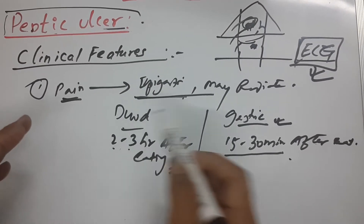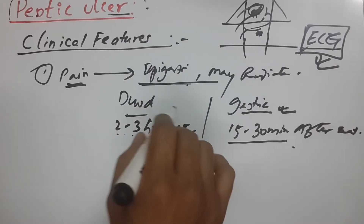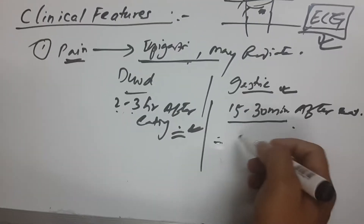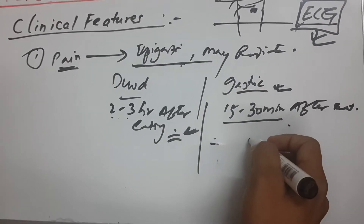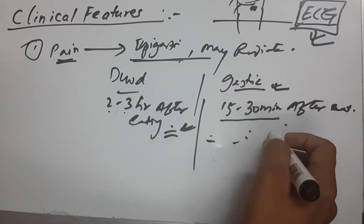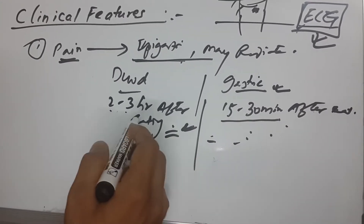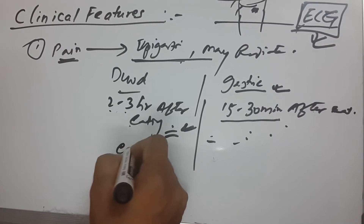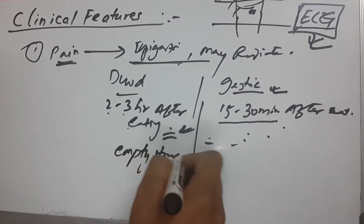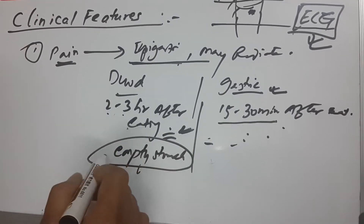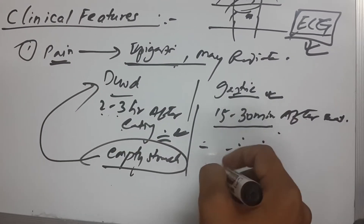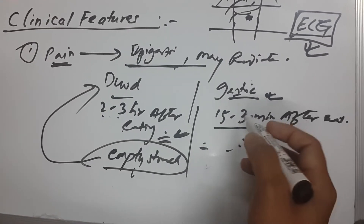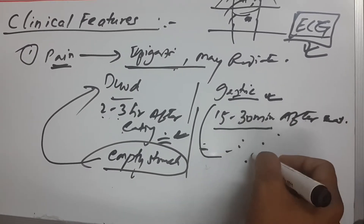With gastric ulcer, the person may be afraid to eat because eating causes pain, due to the release of acid in response to food. With duodenal ulcers, the patient feels pain on an empty stomach — if the stomach is empty, there is pain. But with gastric ulcer, the patient is scared to eat because eating causes pain.